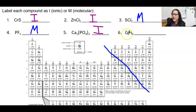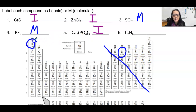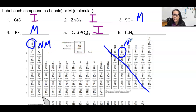Finally, we have carbon and hydrogens. Carbon is here on the right side of the staircase. And though hydrogen is on the left side of the staircase, it's not a metal — it's a non-metal, because hydrogen exists as a gas. So because both of these are non-metals, combined they are a molecular or covalent compound.